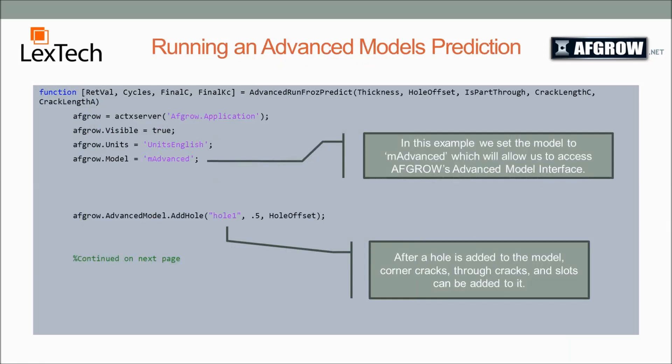This is an advanced models example. It covers two pages. As you can see here, we pass in the thickness, hole offset, the isPartThroughCrack boolean value, the crack length C, and the crack length A, and we are going to return the AFGRO error code as a return value, the cycles, final C, final KC.